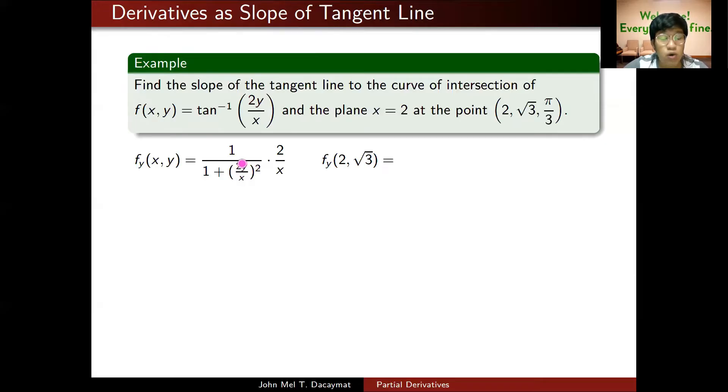This is tangent inverse again, so 1 over 1 plus something squared. The derivative of 2y over x, since y is my variable, is just 2 over x. Plugging in x equals 2, y equals square root of 3, I get 2 squared of 3 over 2, which is square root of 3. Squaring gives 3, so 1 over 1 plus 3, times 2 over 2, which is just 1. I get 1 over 4 for the slope.